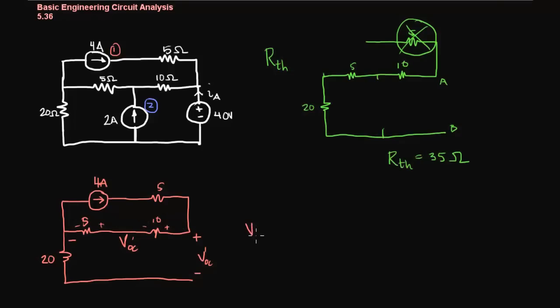So V prime is going to equal 4 times 10 and 4 times 5. So V prime equals 60 volts.